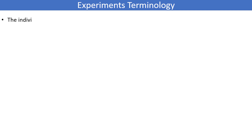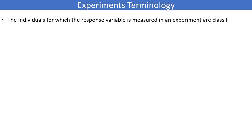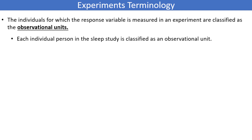There is some more terminology related to experiments we should discuss before moving forward. The individuals for which the response variable is measured in an experiment are classified as the observational units. In our insomnia study, each individual person is an observational unit. But in other cases, an observational unit could be a plant, a tree, an animal, or something else. Whatever individual person or object we are gathering the data from is our observational unit.